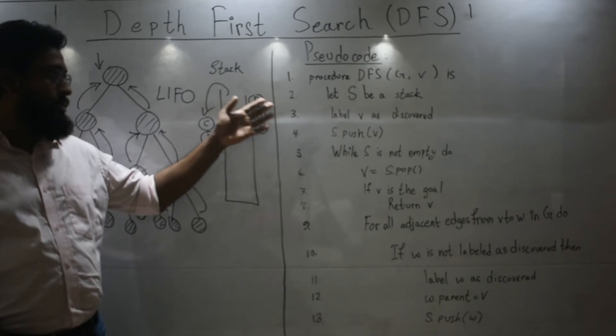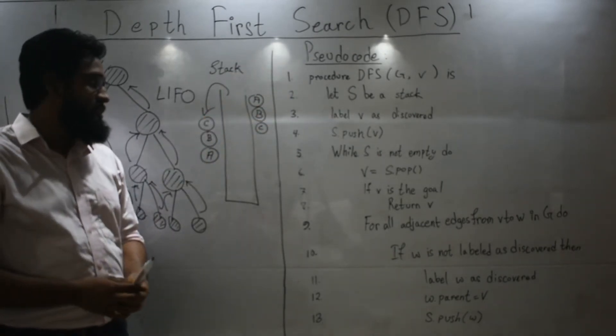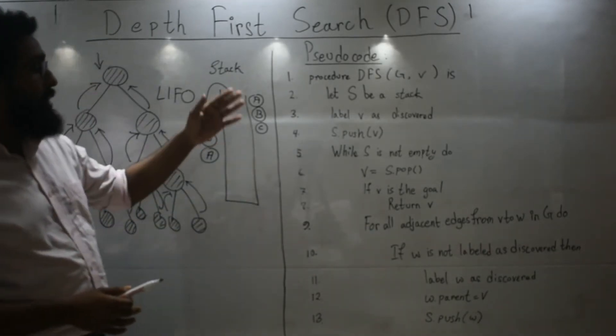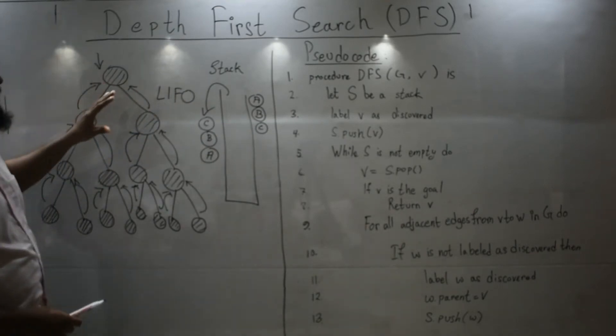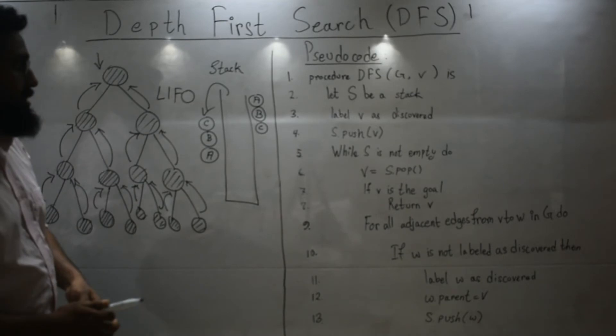Now let me just orient you with the pseudocode of depth first search. After that, I will show you a concrete example of how you use this pseudocode and search your search space like a tree or a graph.